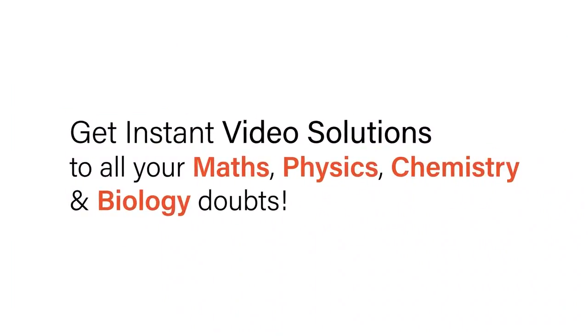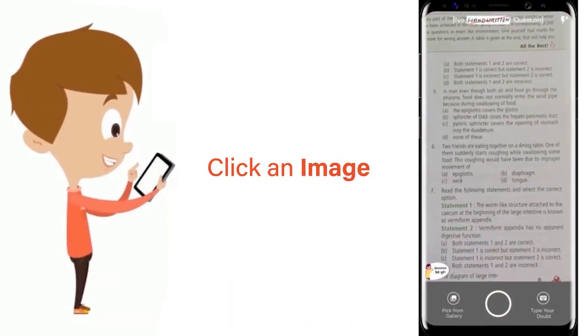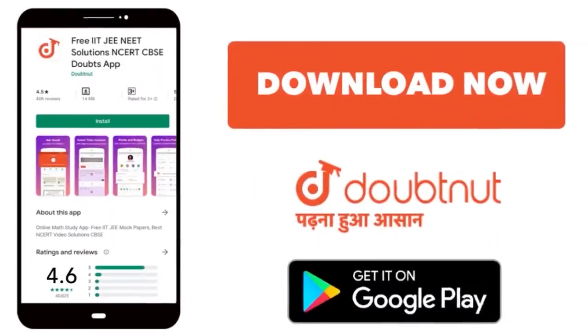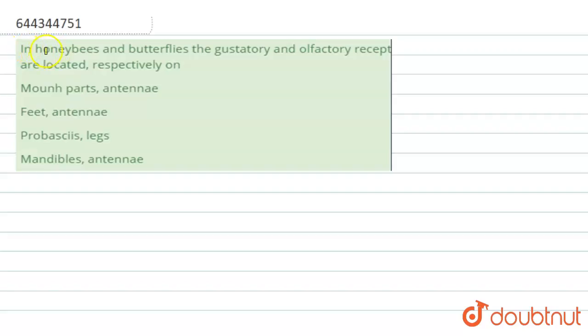With Doubtnut, get instant video solutions to all your maths, physics, chemistry, and biology doubts. Just click the image of the question, crop it, and get an instant video solution. The question asks: In honeybees and butterflies, the gustatory and olfactory receptors are located, respectively, on...